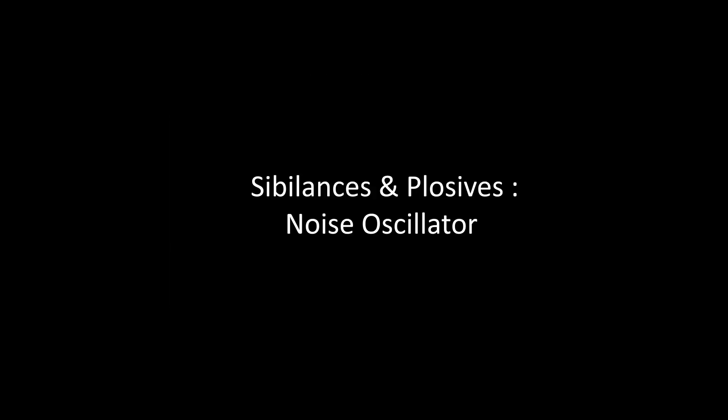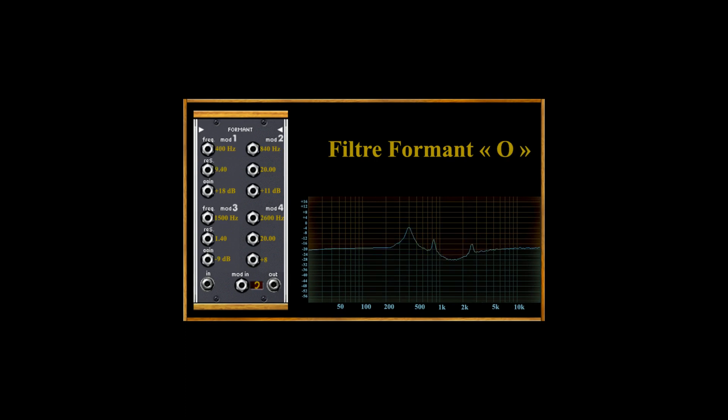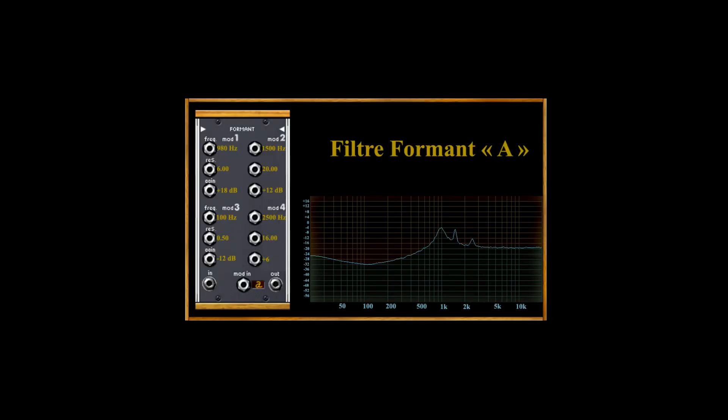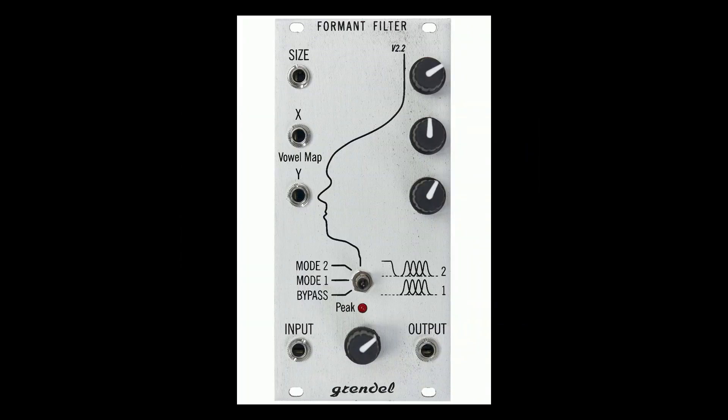Sibilants, or plosives, are created by a noise oscillator. Different vowels as well as noise are then analyzed and put through a formant filter, which is basically cutting different frequencies out. Or simply put: a tonal oscillator creating the pitch is mixed with a noise oscillator responsible for sibilants and plosives, and everything is run through a formant filter which is cutting frequencies out.